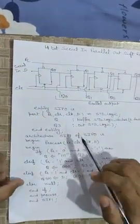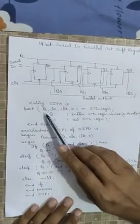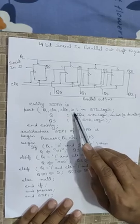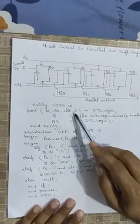So now the program is entity, serial in parallel out is port: preset, clear, clock and D. These are acting as inputs, standard logic and all of these are of 1 bit.